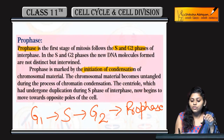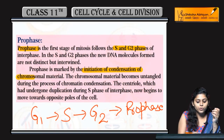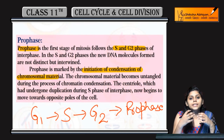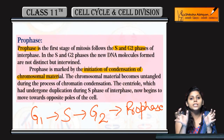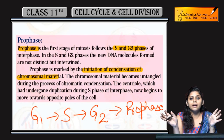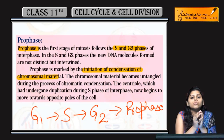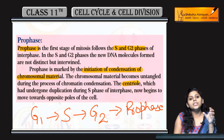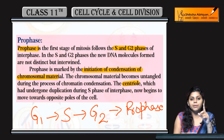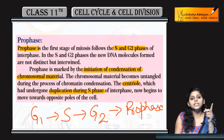Pro phase ke time pe kya hota hai: initiation of condensation of chromosomal material. Jo chromosomal material hai woh tangled hota hai, pro phase me aa kar untangled ho jata hai, means khul jata hai, and condensation hote hai. Uski jo long thin threads hai chromatin ki, woh compact chromosomal structure bana deti hai — compact chromosomes bana deti hai. Centrioles jo present hote hai — humne previous chapters me padha hai centrioles kya hote hai — woh bhi duplication kerti hai.